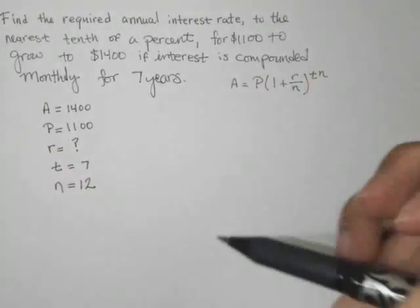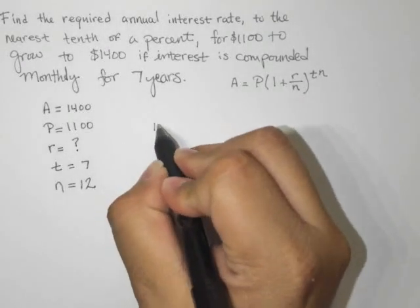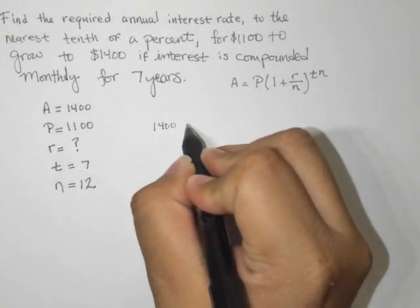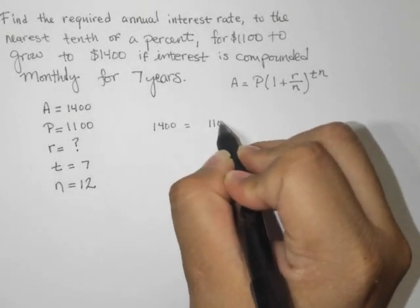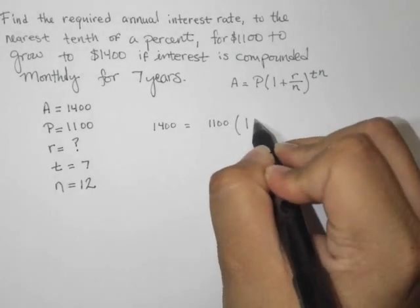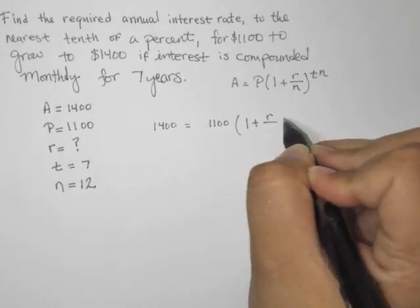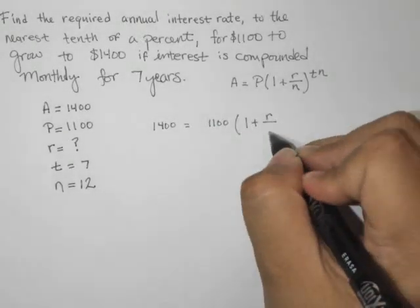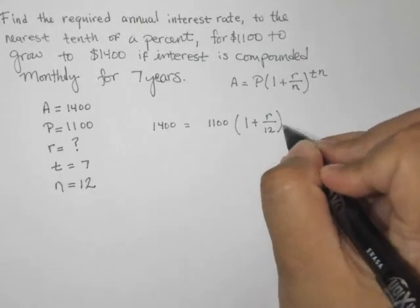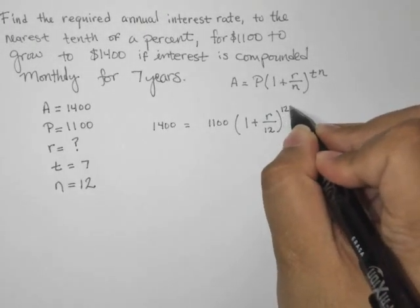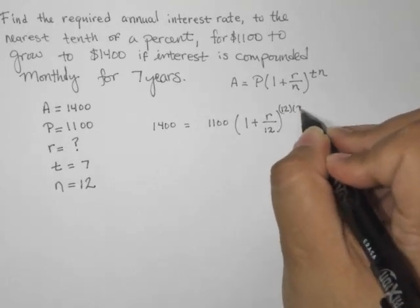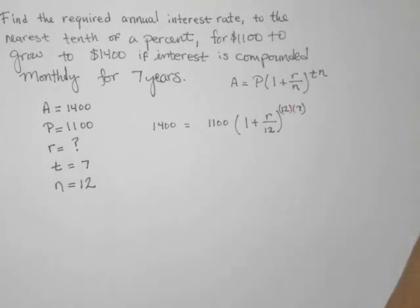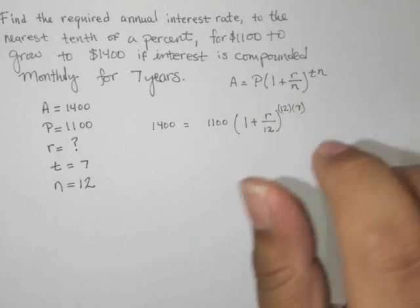Now let's fill in what we know and then try to work with what we've got. So we've got 1,400 equals 1,100 times 1 plus R, which is what we're solving for. N is 12, and raised to the 12 times 7, or 7 times 12.